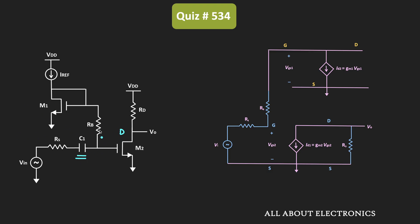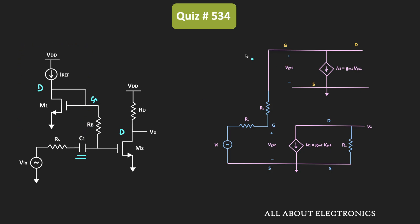For transistor M1, resistor Rb is connected between the gate of M2 and the gate of M1. The drain and gate terminals of M1 are connected together, making M1 a diode-connected transistor with its gate and drain shorted. Since the DC current source acts as an open circuit, the drain terminal is kept open. This gives us the small-signal equivalent circuit, and to find the voltage gain we first find the equivalent resistance seen through resistor Rb.